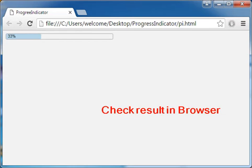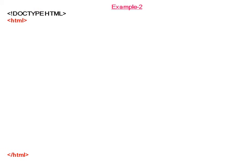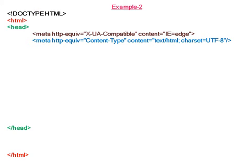We attach this progress indicator to the div element, which is the user interface area. Now checking the result in the browser, you can see the progress indicator with 33 percent value displayed.